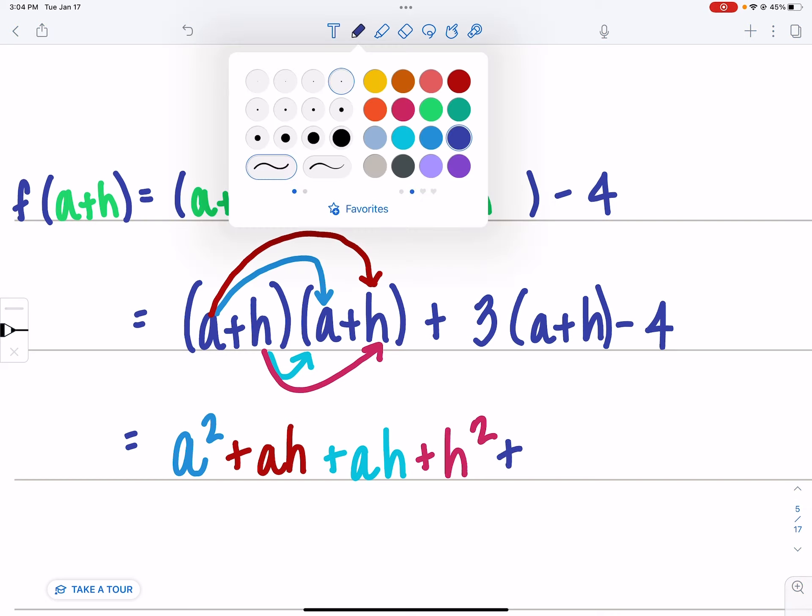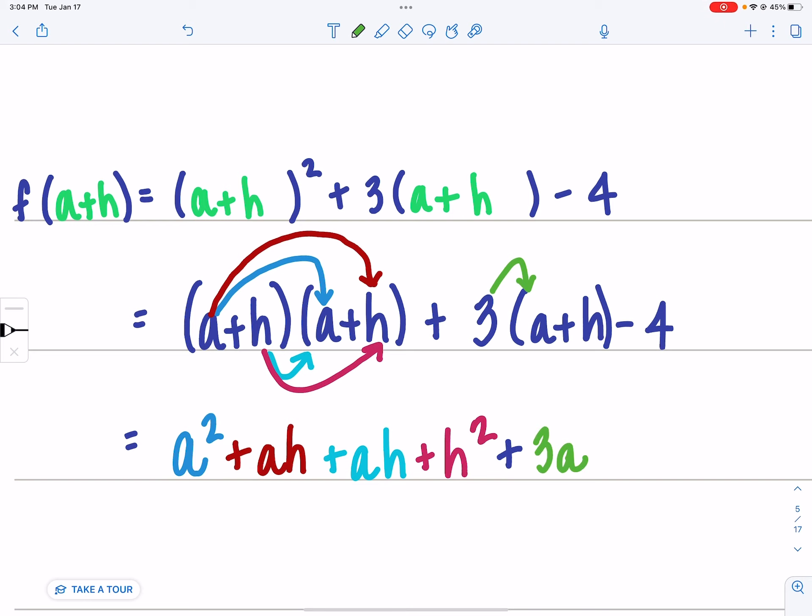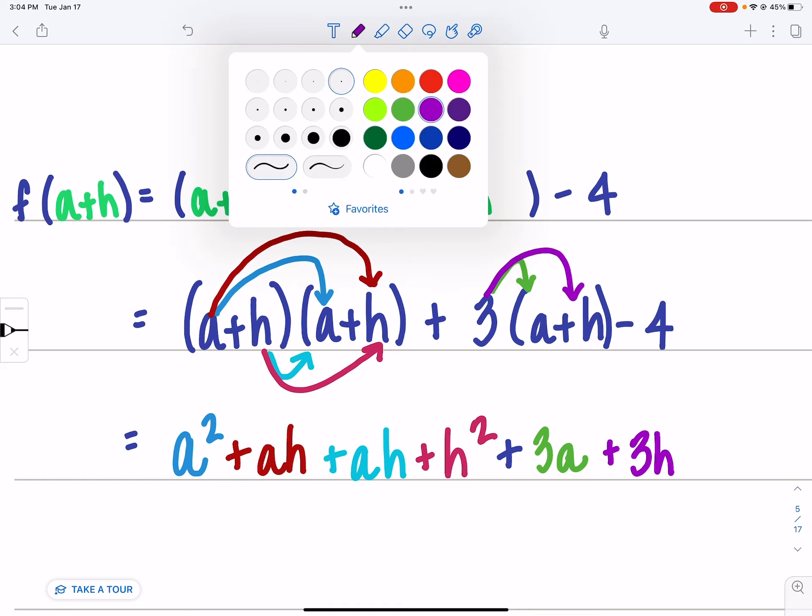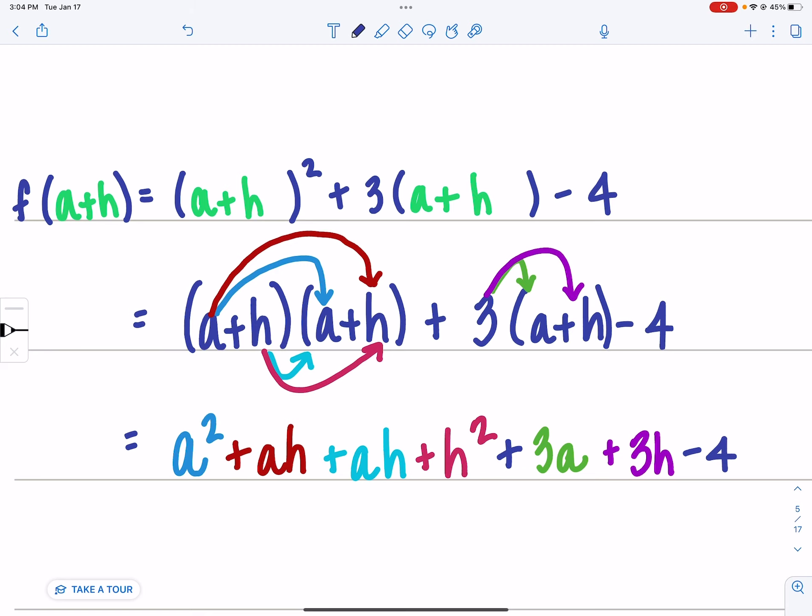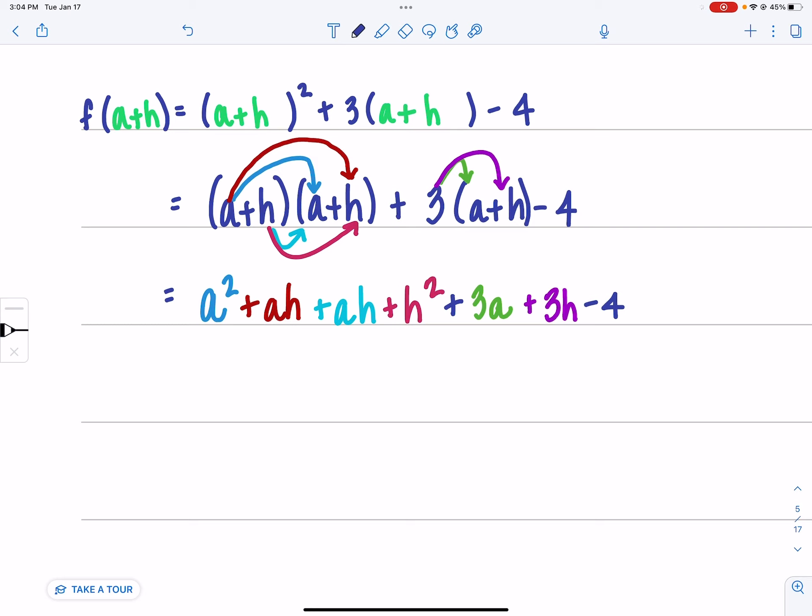Then I have to distribute the three to the a, so that gives me 3a, and then three times h. And then my poor little minus four doesn't get to do anything, he just gets to be brought down to the next line. Then we go collect like terms. I only have one a squared, I have two ah's, so I get plus 2ah. I only have one h squared, I only have one 3a, I only have one term with an h in it, and as ugly as that is, that's the final answer.